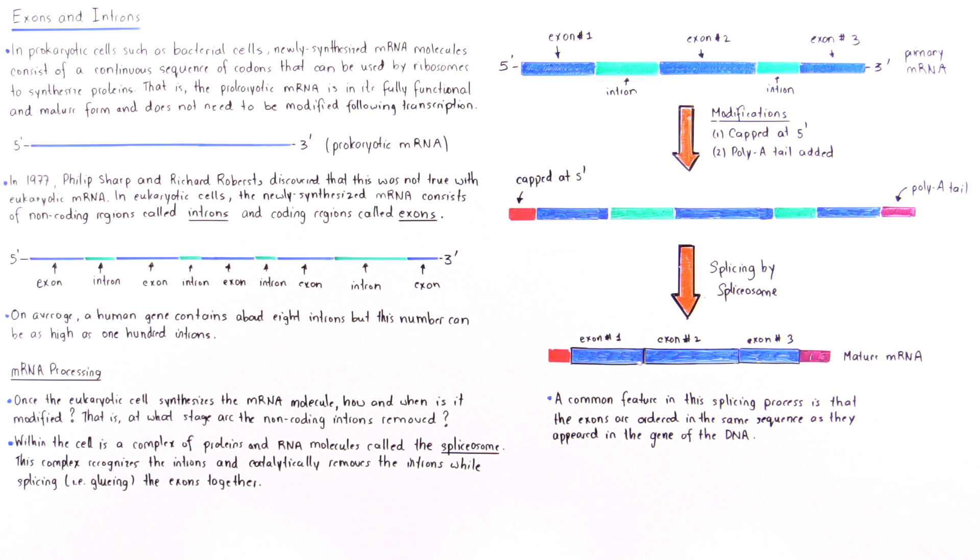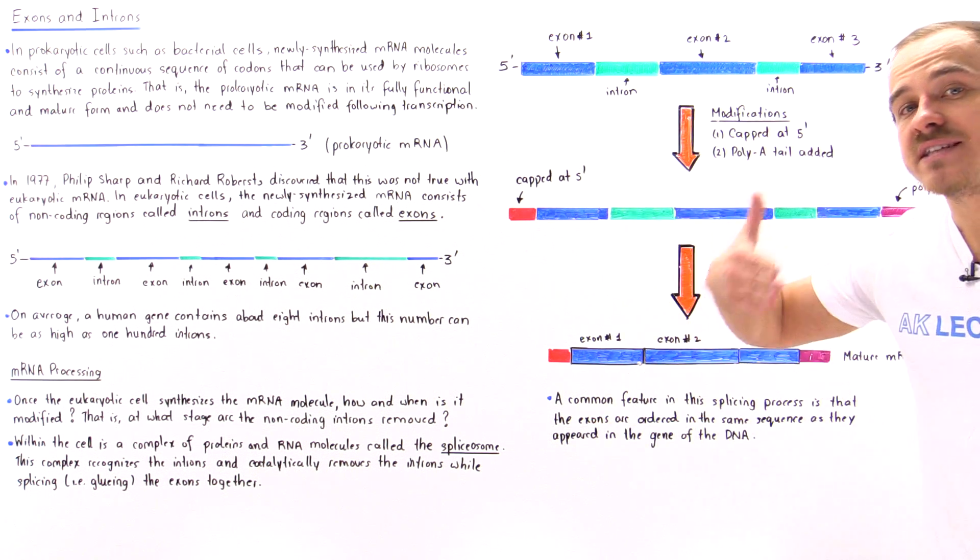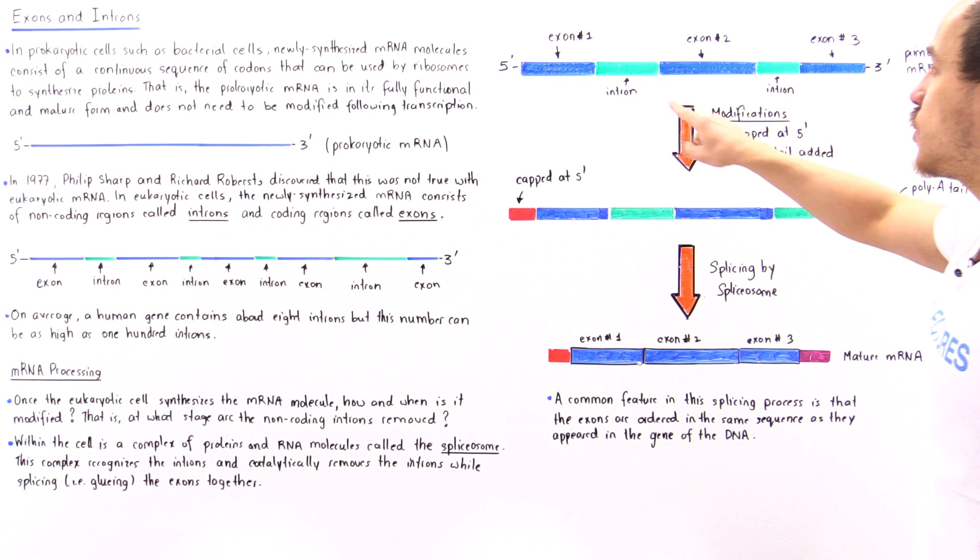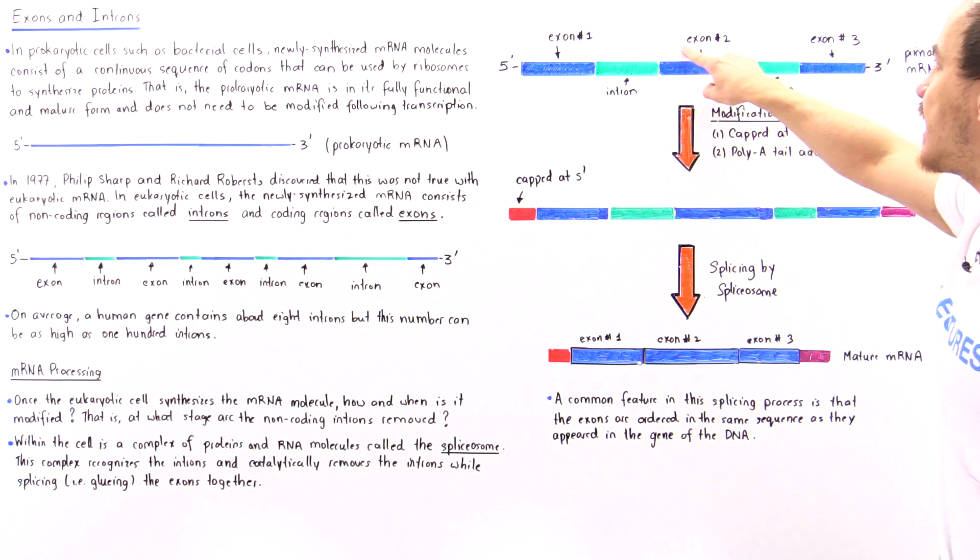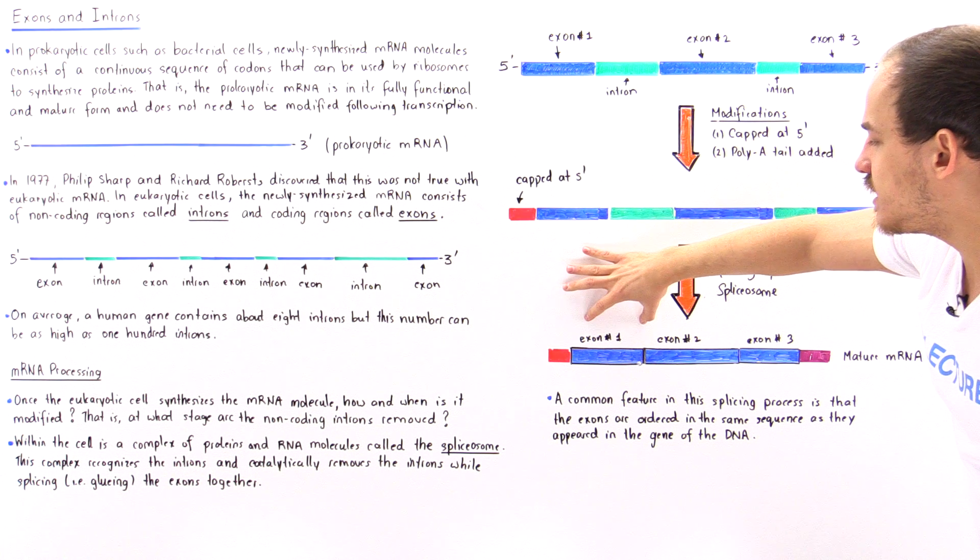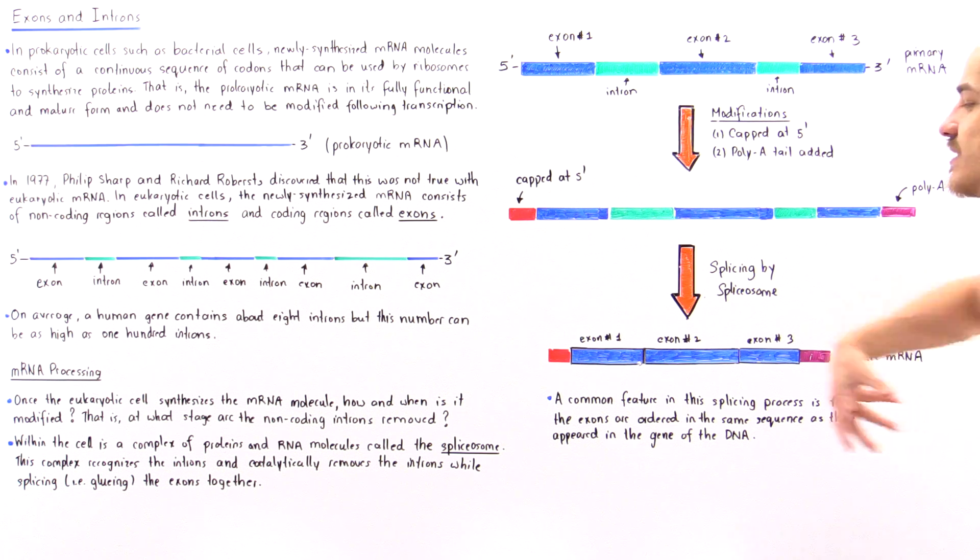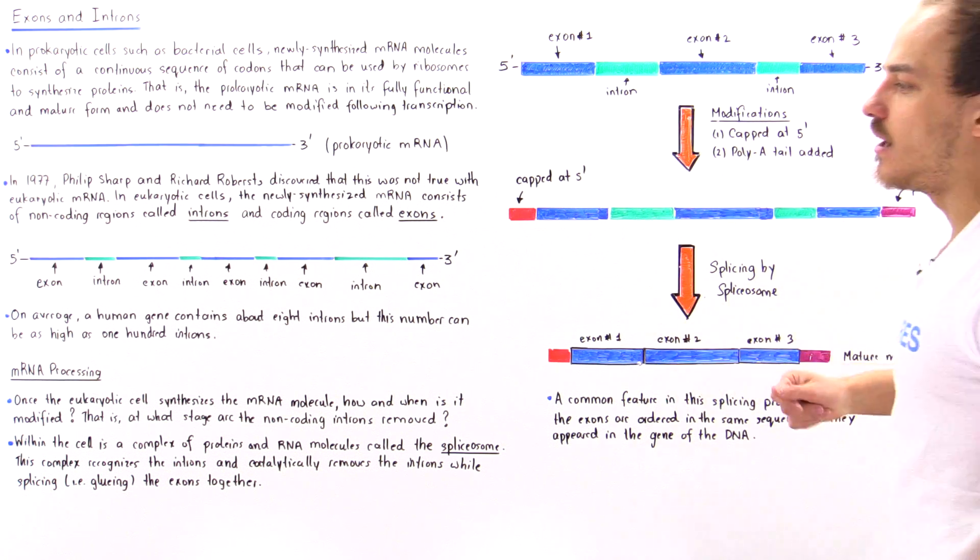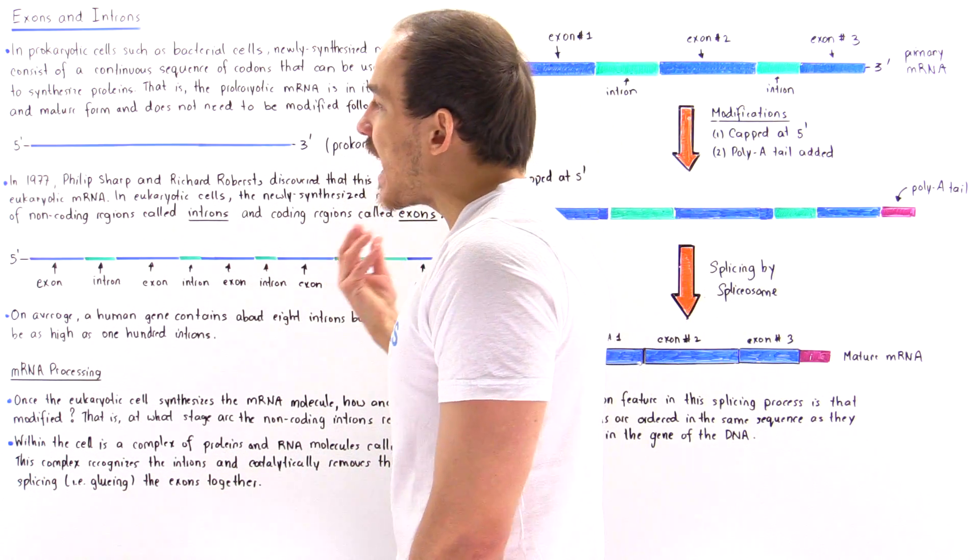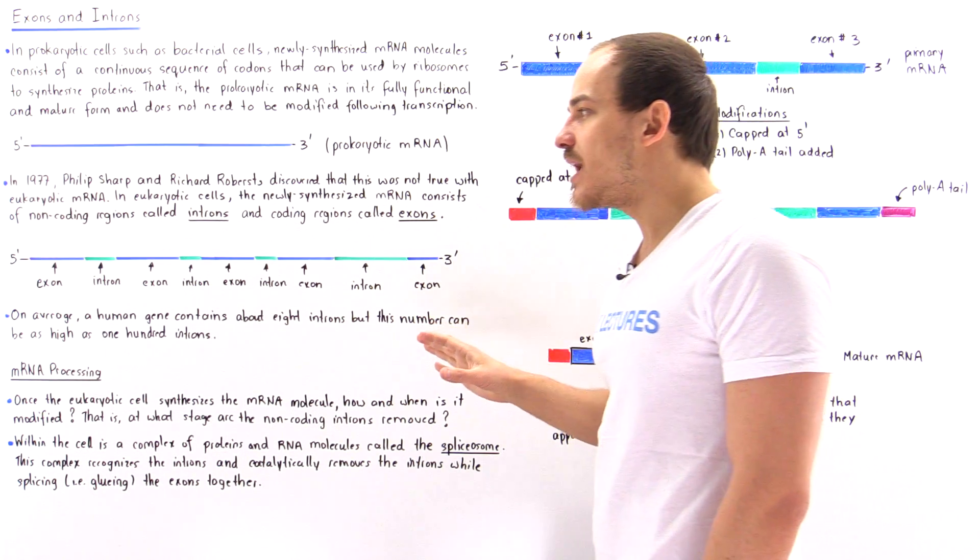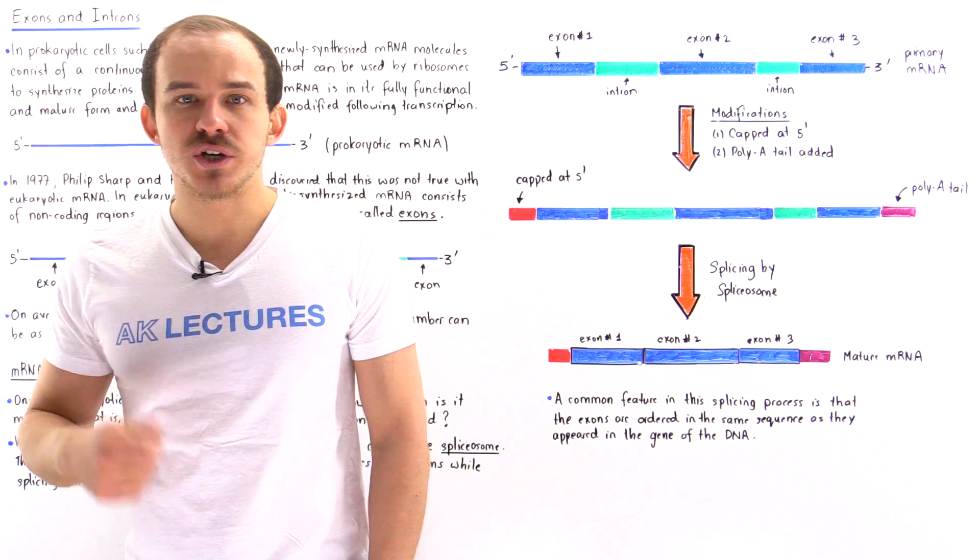Now, notice that a common feature in the splicing process, in the splicing mechanism, is that the exons are actually ordered in the same sequential manner that the gene had those coding regions on the DNA molecule. So initially, we began with exon number one, exon number two, exon number three, and what we see here is exon number one, followed by exon number two, followed by exon number three. So this is usually what we see in the process of splicing. And we'll discuss how this actually takes place, and why these modifications actually exist in much more detail when we get into the process of transcription and translation.